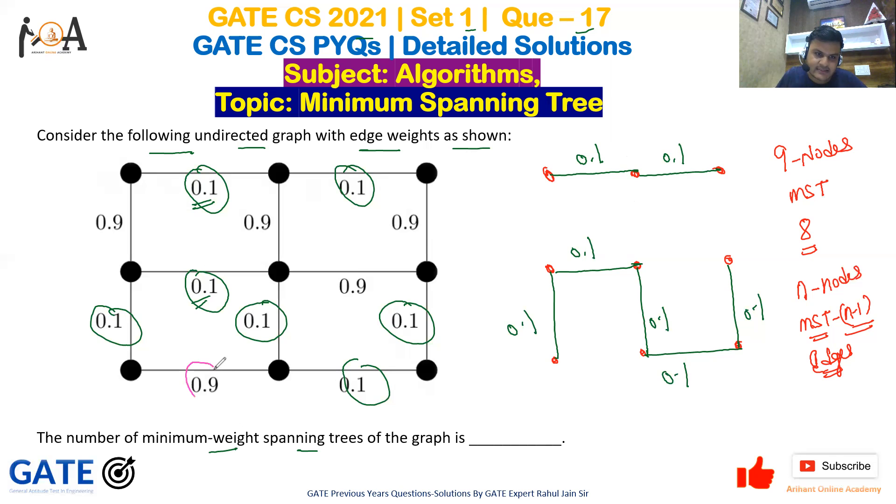If I take this edge, I can't, because if I take this one it would make a cycle. Similarly, I can't take this one also because it will again make a cycle. So remaining are this one, this one, and this one.